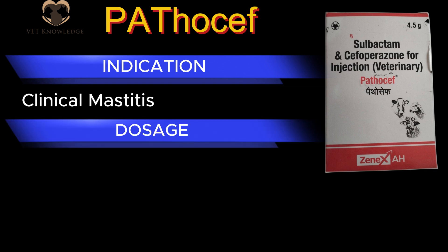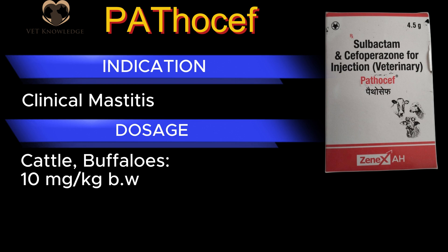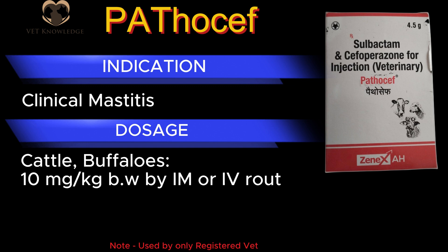Dosage: For cattle and buffaloes, 10mg per kg body weight by IM or IV route. Note: To be used by ALMI-registered veterinary practitioners only.